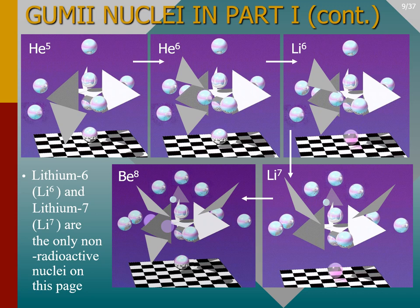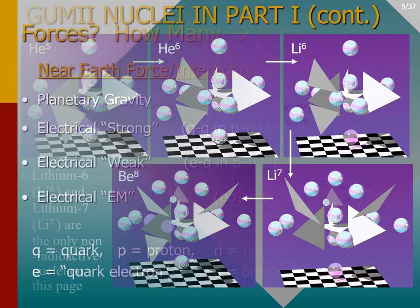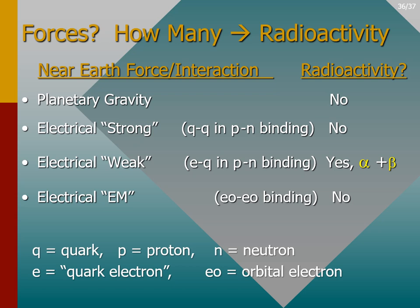A good place to start is by identifying the forces that cause radioactivity. There are four forces: gravity, electrical strong force, electrical weak force, and electrical EM force. Except for gravity, all of these forces are variations of the electrical force, and they are all well described by the standard model. So what causes radioactivity — in particular, alpha and beta rays? What force determines when the nucleus will disintegrate? On Earth it's not gravity, and it's not the strong force.